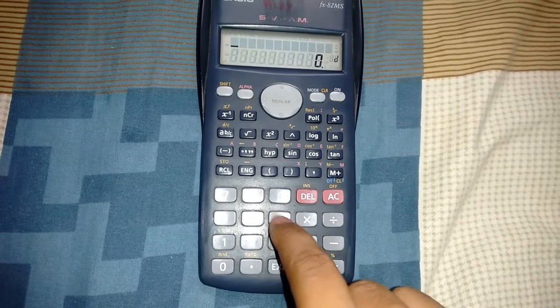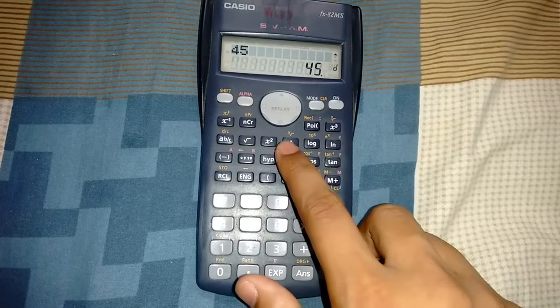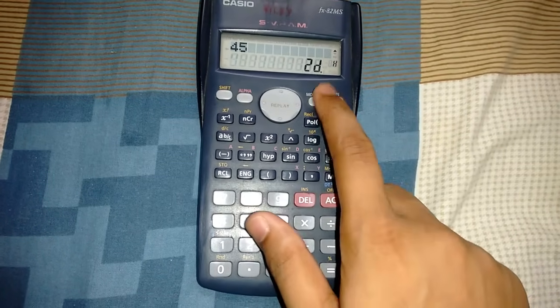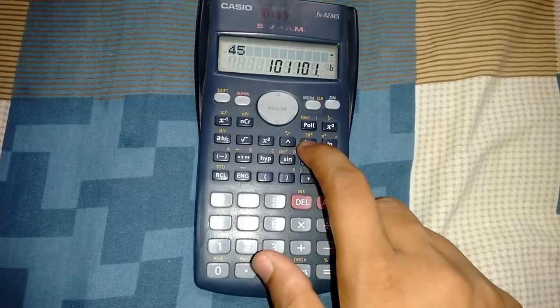Let me type like 45 in decimals equals 45. This is for hexadecimal H, this is for binary B, and this is for octal 55.